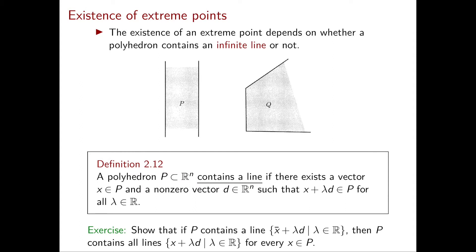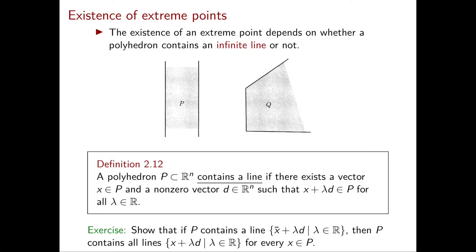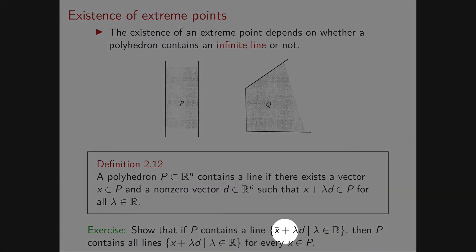To fully understand what it means for a polyhedron to contain a line, I suggest you do the following exercise. Essentially, you can slightly change the definition and still obtain an equivalent one: you could replace 'there exists a vector x in P' with 'for every vector x in P.' So in the exercise you're showing that if P contains one line, say x-bar plus lambda d, then P contains all lines x plus lambda d for every x in P.